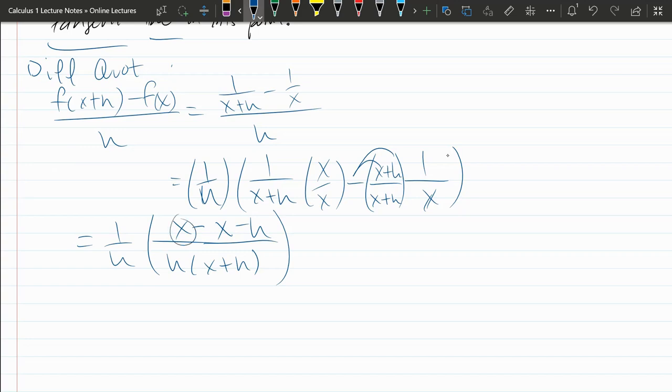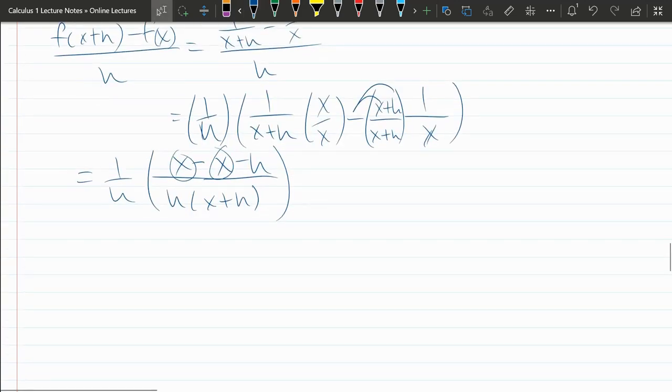So the x minus x cancels those two right there. And we're left with one over h times negative h, h times x plus h. And I definitely made another mistake. That should be an x.